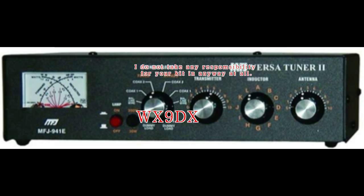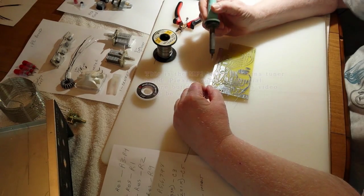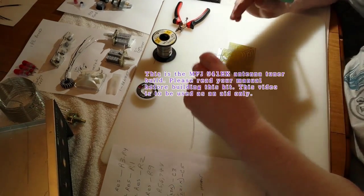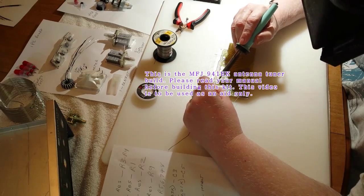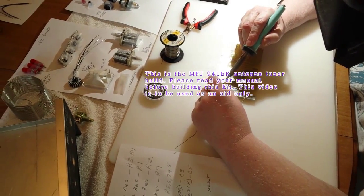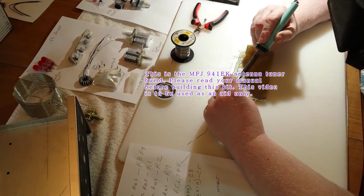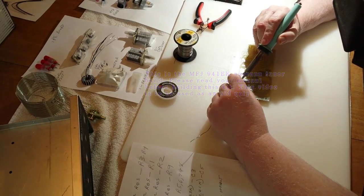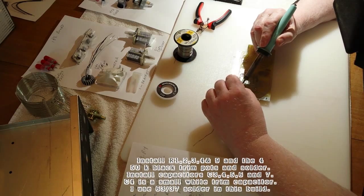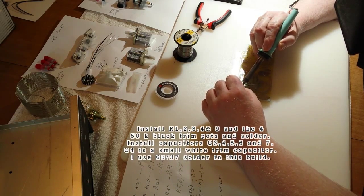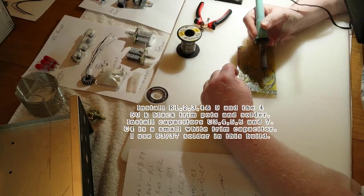Hello, this is Jimmy WX9DX and welcome to my build of the MHA 941 EK antenna tuner. Here I'm using a 30 watt iron with 6337 eutectic solder. It has one degree of plastic range and that's about half the temperature of regular 60-40 solder.